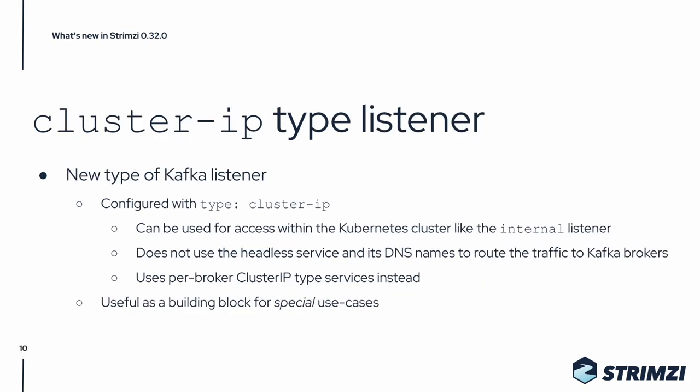In Strimzi 0.32, after a long time, we also introduced a new type of Kafka listener. It is called Cluster IP and it can be used for access to the Kafka cluster within the same Kubernetes cluster, similarly to the existing internal listener. The main difference between the Cluster IP and the internal listener types is that the Cluster IP listener doesn't use the headless service and the DNS names given to individual broker pods to route traffic. Instead, it creates for each broker a dedicated Cluster IP type service and uses that for routing the traffic. This listener is useful especially as a building block for different special use cases.